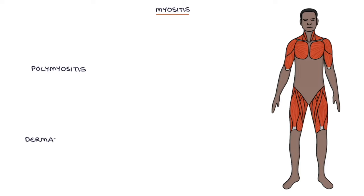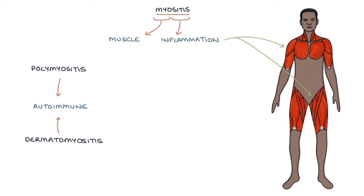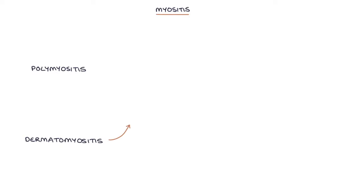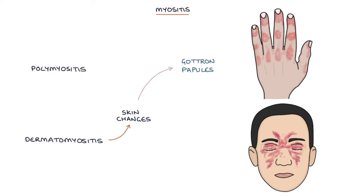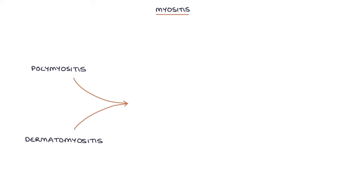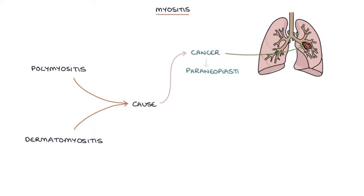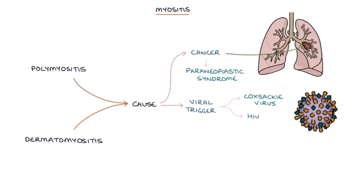Polymyositis and dermatomyositis are autoimmune conditions that cause muscle inflammation, which is called myositis. Both conditions present with proximal muscle weakness at the tops of the arms and the tops of the legs. Dermatomyositis also involves characteristic skin changes, specifically Gottron papules affecting the backs of the hands and the heliotrope rash affecting the eyelids. These conditions can be caused by an underlying cancer, making them paraneoplastic syndromes. A viral infection such as Coxsackie virus or HIV may be the trigger, and certain HLA genes are risk factors.